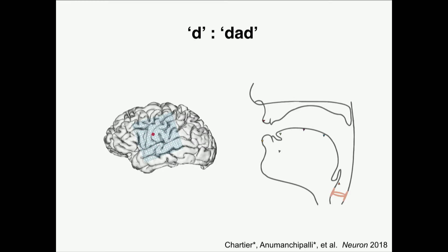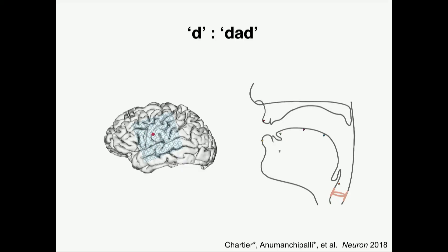One of our reports published last year in Neuron described that when you look at individual millimeter sites in the part of the brain called the motor cortex that corresponds to the vocal tract, we were able to describe how each individual area correlates to movements in the vocal tract. This animation shows a series of points on the human vocal tract — including the tongue, the lips, and the jaw — and how they move when someone speaks. It shows how one particular part of the brain, indicated as a red dot on the schematic, relates its neural activity to movement. Whenever we make a sound like 'duh' or 'dad,' the front of the tongue goes up and back, the back of the tongue goes down, and the jaw goes up and down.